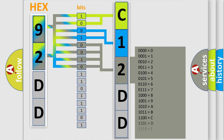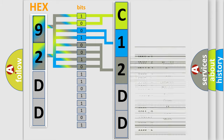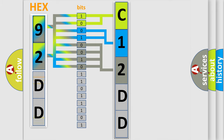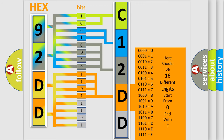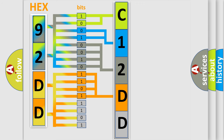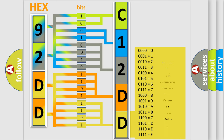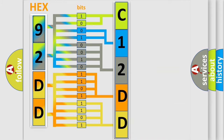The second byte is composed of a combination of eight bits. The first four bits determine the fourth character of the code, and the combination of the last four bits defines the fifth character. A single byte conceals 256 possible combinations.